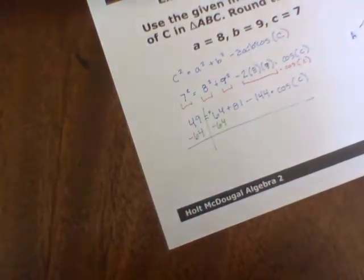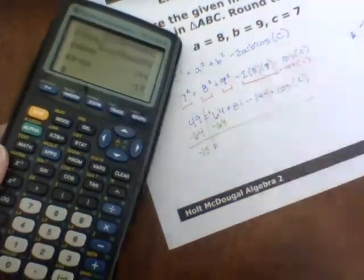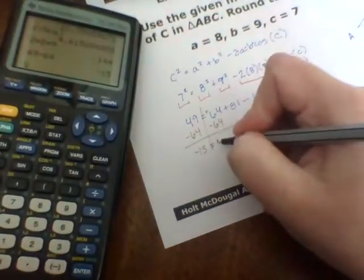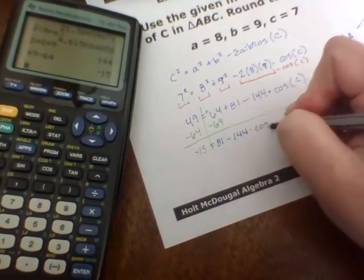So in order to solve this, we're going to subtract out the pieces that are being added. So this positive 64 is going to be subtracted to the other side. So 49 minus 64 leaves you with negative 15.